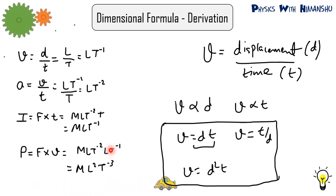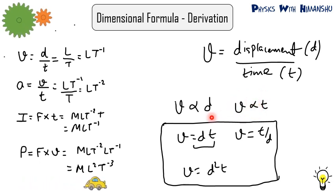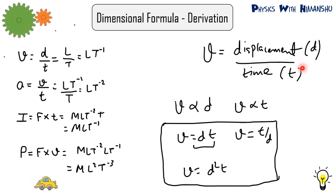This is how we find dimensions of different derived quantities. Now suppose you don't know the formula for a quantity — for example, suppose the formula for velocity is unknown. Someone might say V is proportional to displacement D, or V is proportional to time T, or both. We need to find the actual powers of D and T using dimensional analysis. For velocity we know it is D by T, so power of D is 1 and power of T is minus 1. For many quantities where the formula is unknown, we can use dimensional analysis to find it.